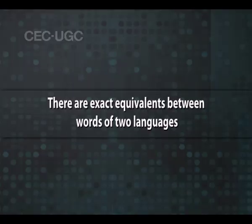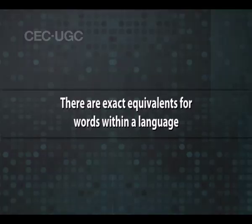Another misconception is that there are exact equivalents between words of two languages. In fact, there are no exact equivalents between words of any two languages. Language is based on the history, tradition and culture of its people, so its words cannot be exactly translated into another language. Similarly, no two words within a language have the same meaning — they may have similar meanings but there is often a delicate shade of difference.